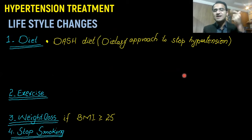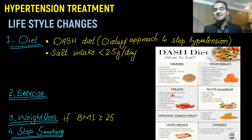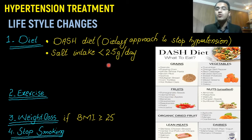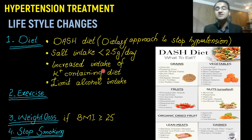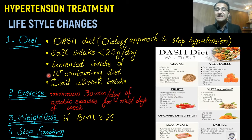Lifestyle modifications include diet, exercise, weight loss, and smoking cessation. In diet, patients follow the DASH diet — Dietary Approach to Stop Hypertension — which includes grains, vegetables, fruits, unsalted nuts, lean meats, and certain dairies. They must limit salt intake to less than 2.5 grams per day, increase potassium intake (e.g., bananas, with caution in kidney disease), limit alcohol, perform at least 30 minutes of aerobic exercise most days, lose weight if BMI is ≥25, and quit smoking.